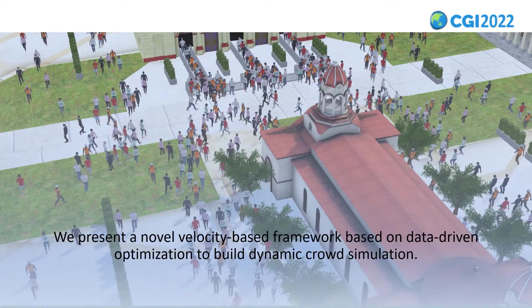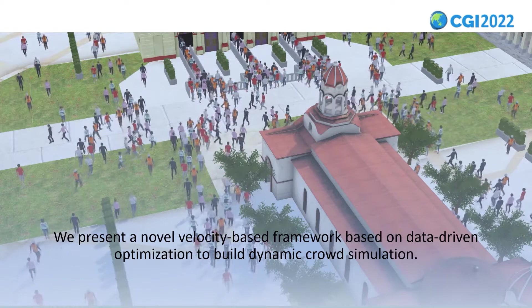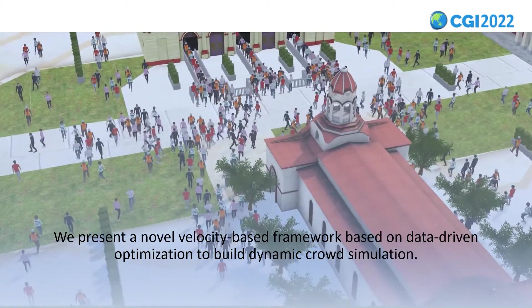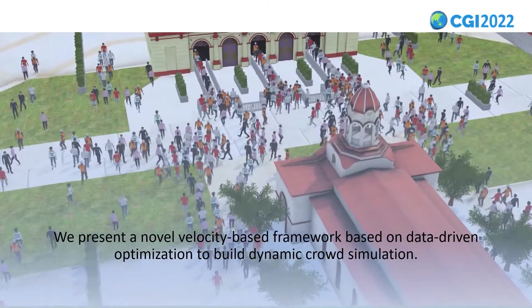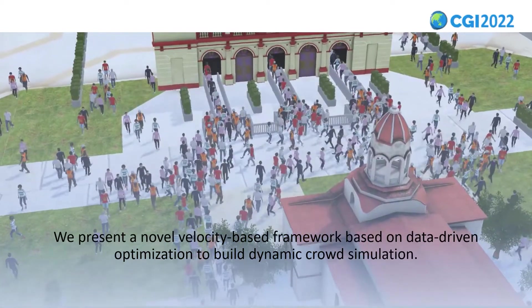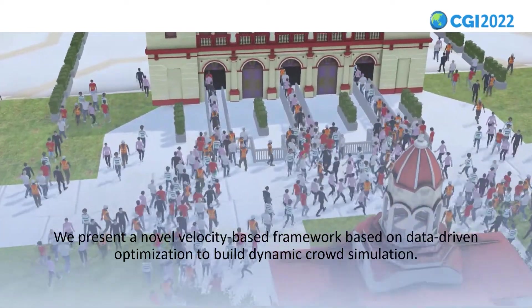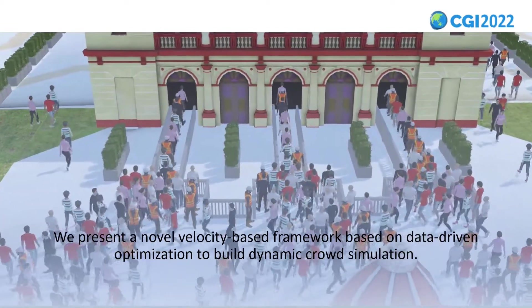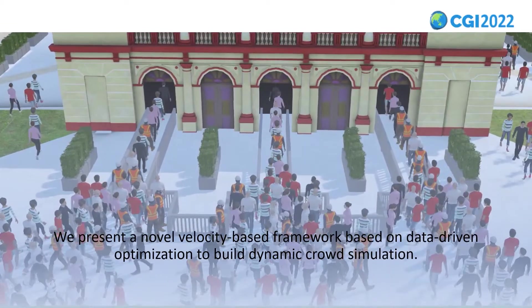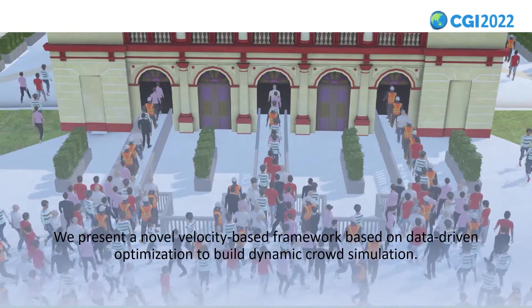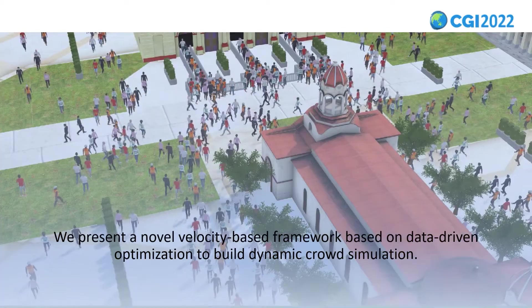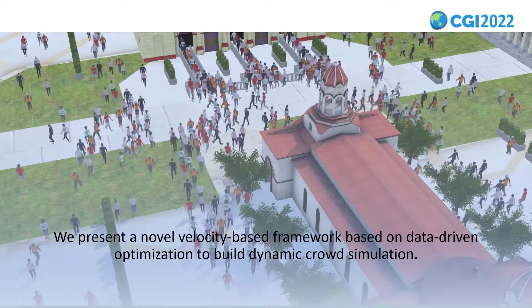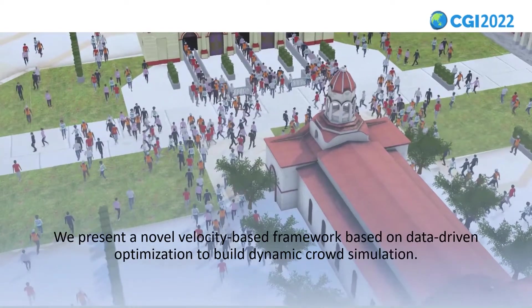We present a novel velocity-based framework based on data-driven optimization to build dynamic crowd simulation that allows interactive control of global navigation, local collision avoidance, and group formation. The decision-making process of each agent is formulated as an optimization problem, which can be solved by selecting a velocity from the real-world crowd dataset that tends to minimize a newly defined crowd energy metric.